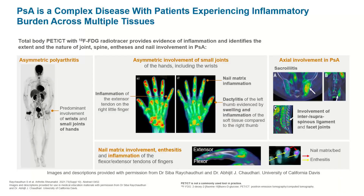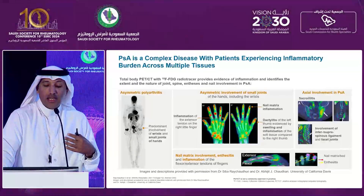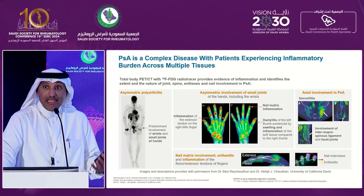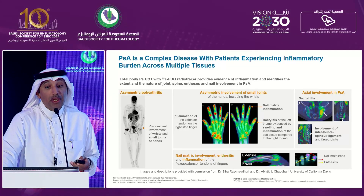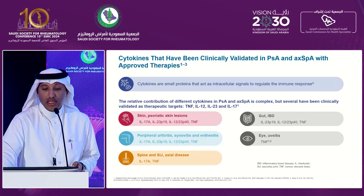PsA, as you all know, is a very complex and very heterogeneous disease. Previously we said it has six domains, but nowadays we know it has eight domains. We added IBD and uveitis. So patients with PsA may present with peripheral asymmetrical oligoarthritis, polyarthritis, axial dactylitis, enthesitis, and so on. This is a complex, very heterogeneous disease.